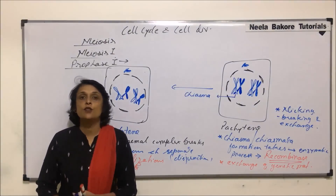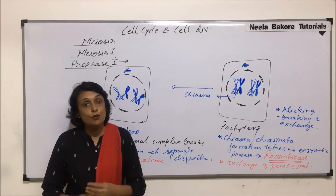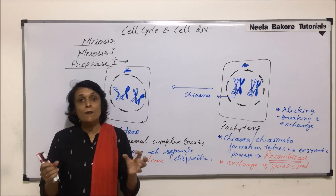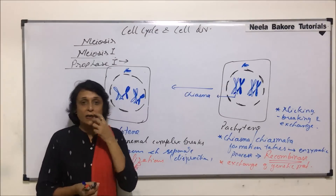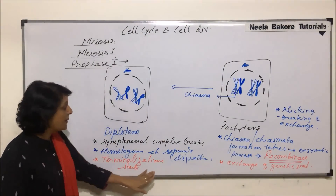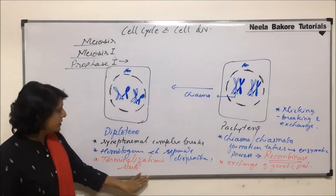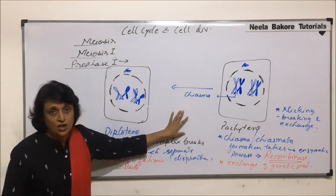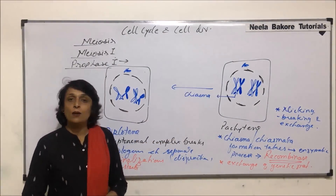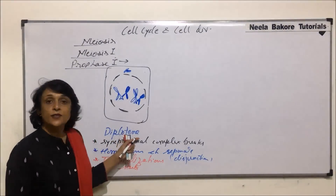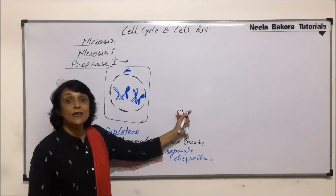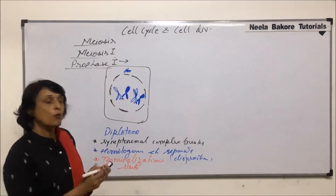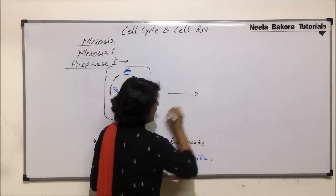Variation is very essential for evolution, and that is how the gametes will have different recombinant DNA or genetic material. After diplotene comes the last stage of Prophase I, which is diakinesis.